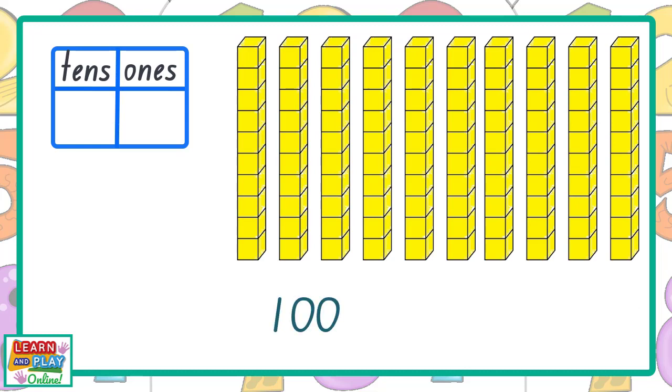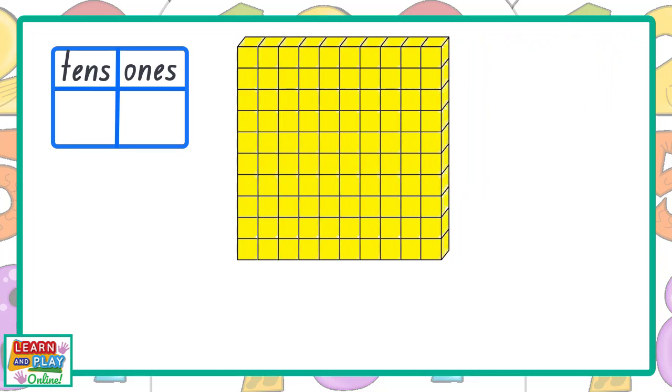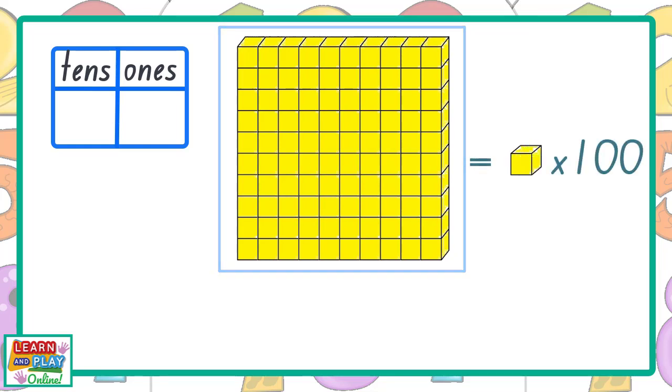So we now know we have 100 blocks all together. The number 100 is a 3-digit number. It is made up of 3 digits: 1, 0, and 0. There is an easier and faster way to count large numbers. Just like before, we are going to combine all of these 10 blocks together. This makes it easier for us to count larger numbers because now we know that when we see this big block, we know that it is made up of 100 ones blocks. This means that we can count by 100.